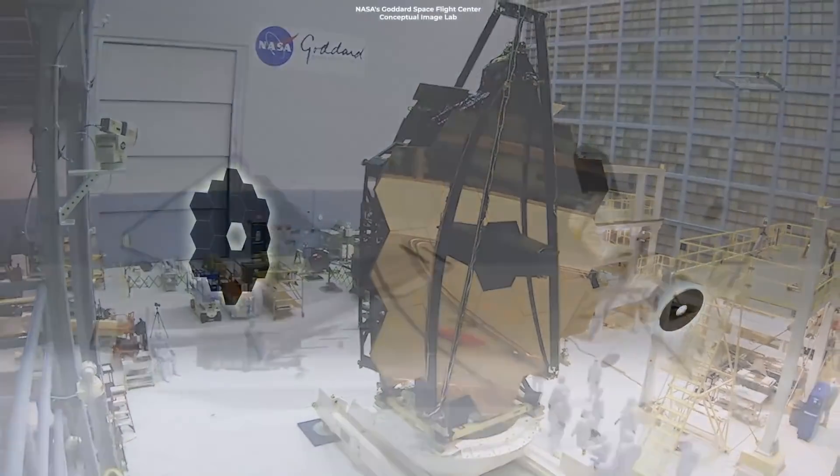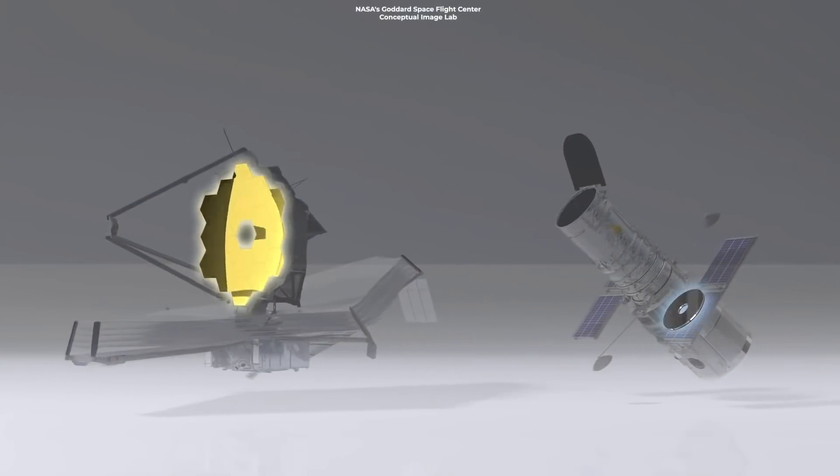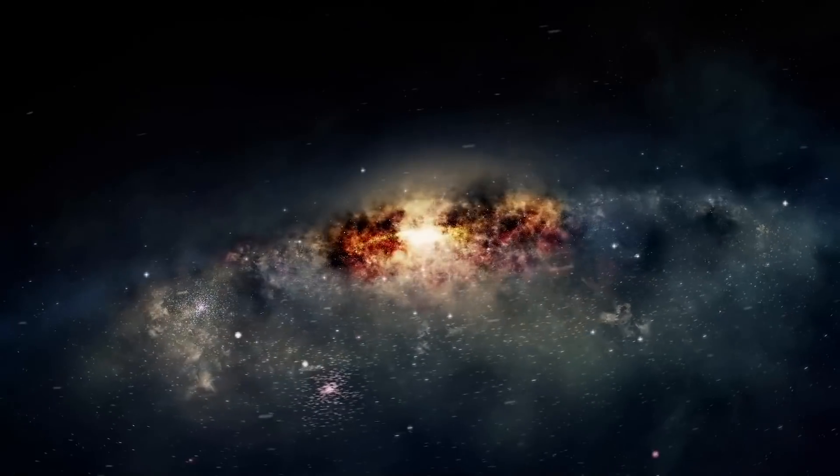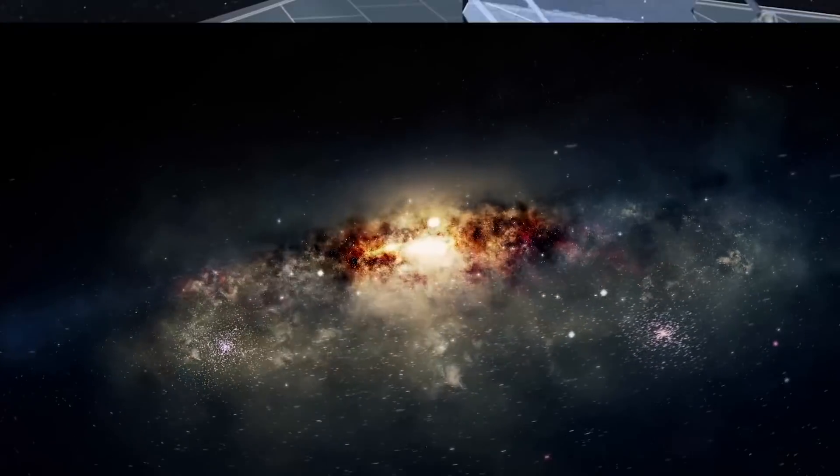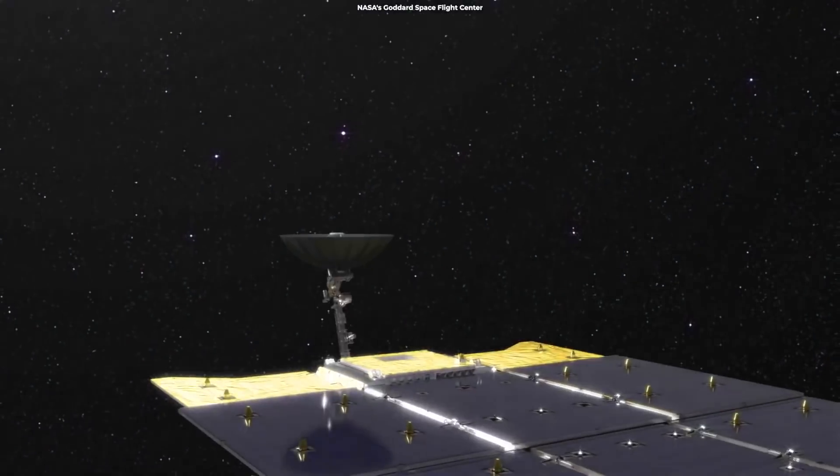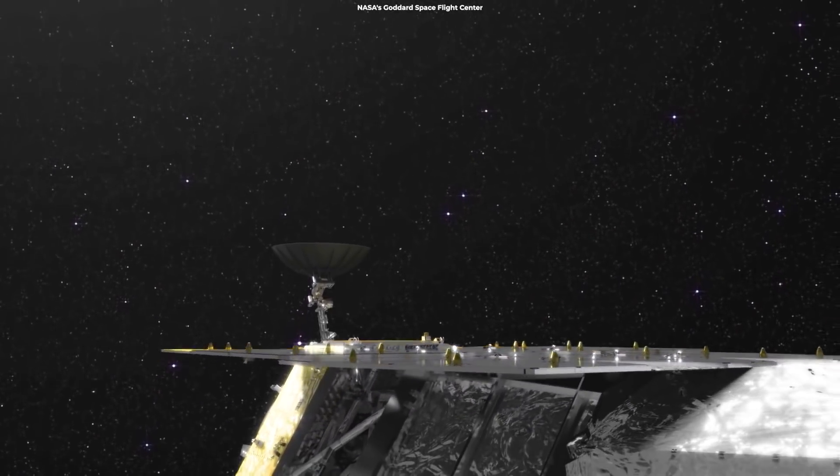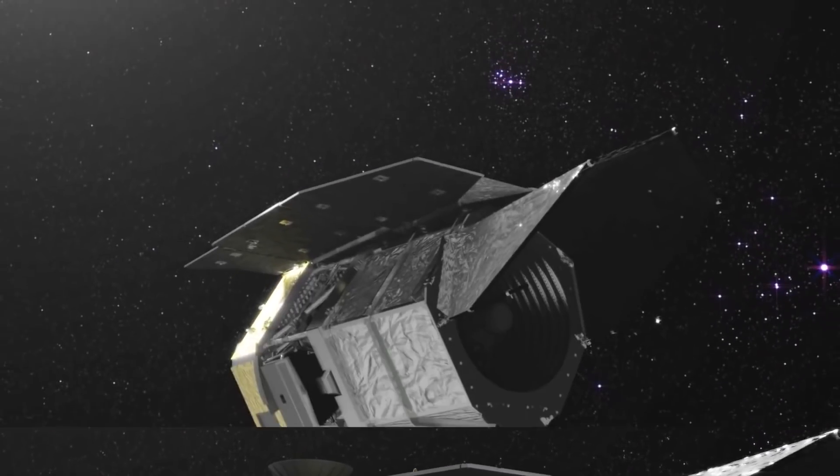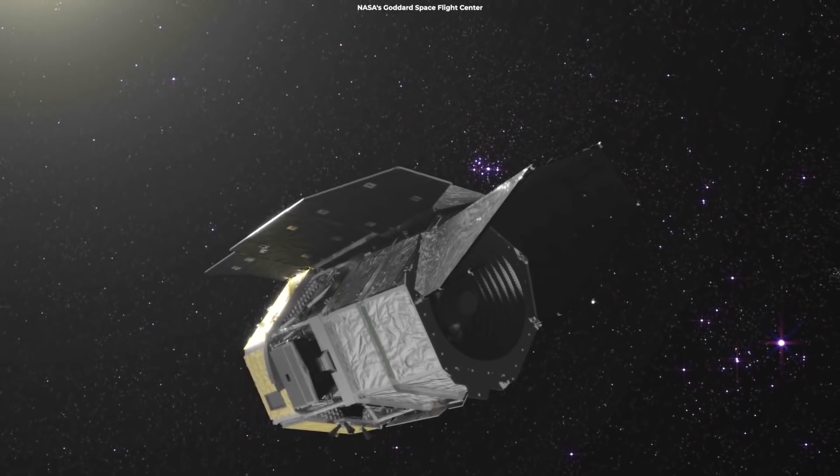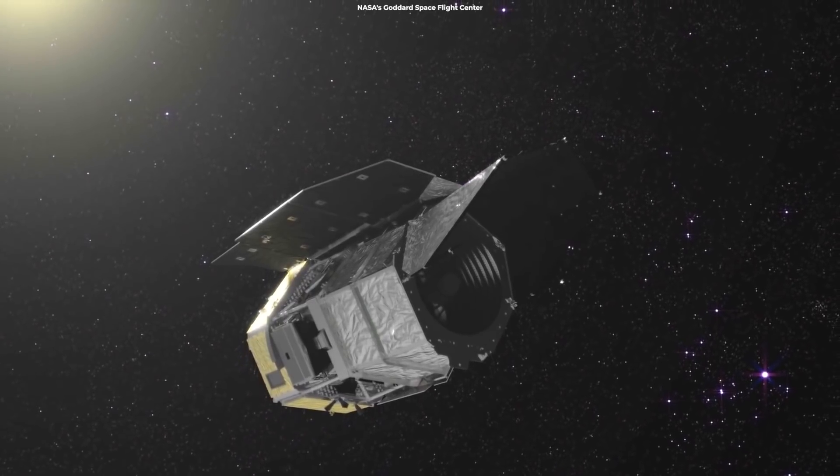The massive James Webb Space Telescope took $10 billion to come to life. How much is the LUVOIR going to cost? For LUVOIR-A, the initial cost estimates are approximately $10 billion, with lifetime cost estimates of $18 billion to $24 billion.